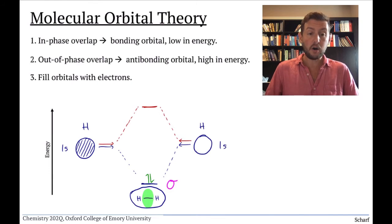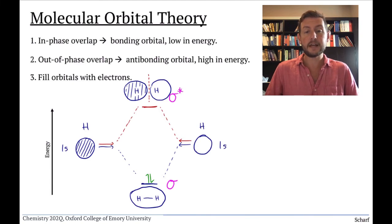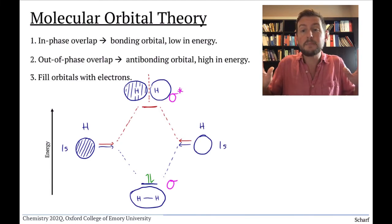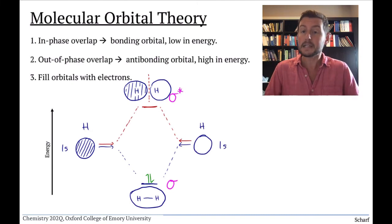H2 also has an empty antibonding orbital, called a sigma star orbital, which looks like this. Because there's a node between the two nuclei, if an electron would occupy this orbital, it would push the atoms apart, hence antibonding.